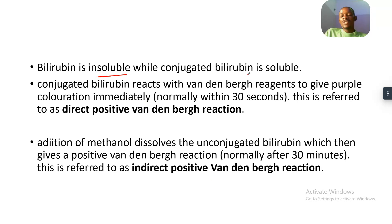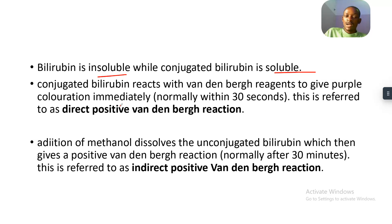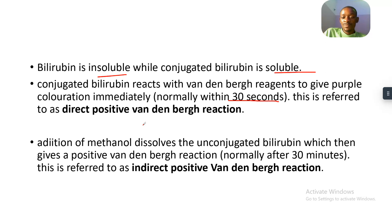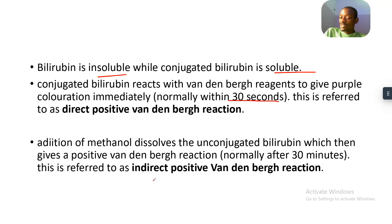Unconjugated bilirubin is insoluble, while conjugated bilirubin is soluble. Conjugated bilirubin reacts with the Van den Bergh reagent to give a purple coloration immediately — normally within 30 seconds. This is referred to as the direct positive Van den Bergh reaction.